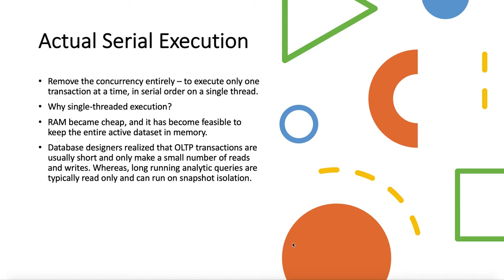There are two main reasons to move to single-threaded execution. The first is that RAM has become cheap over time and it has become feasible to keep the entire data set in memory. When all the data a transaction requires is present in memory, it becomes much faster to execute than if data had to be loaded from disk. The second reason is that database designers realized that OLTP transactions are usually short and take only a small number of reads and writes, whereas long-running analytic queries are generally read-only and can run on consistent snapshot isolation.